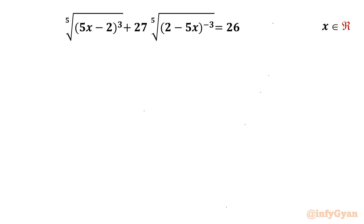Welcome to Infigyan friends. Today in this video we are going to take up another challenging question from radical equations. It is the 5th root of (5x minus 2) whole cube, plus 27 times the 5th root of (2 minus 5x) to the power minus 3, equal to 26. We have to find the real solutions.